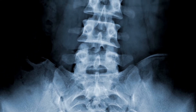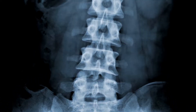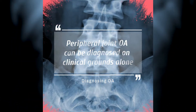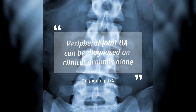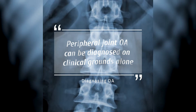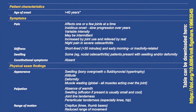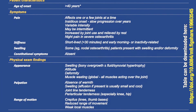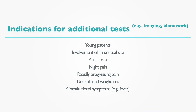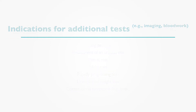Osteoarthritis is usually diagnosed without radiography or laboratory investigations. Peripheral joint OA can be confidently diagnosed on clinical grounds alone in the presence of a few clinical features. Additional testing, like imaging and laboratory investigations, should be carried out in younger individuals with symptoms of OA, or in the presence of atypical symptoms like involvement of an unusual site, marked pain at rest or night pain, or if pain is rapidly progressing.